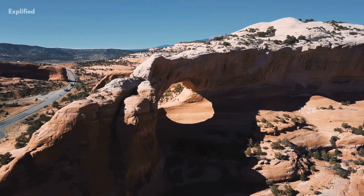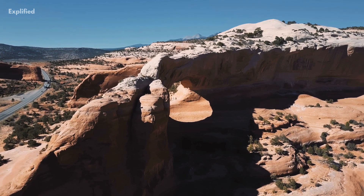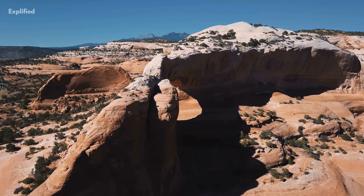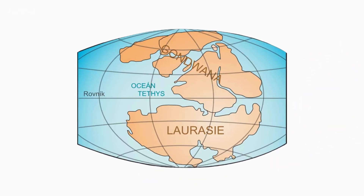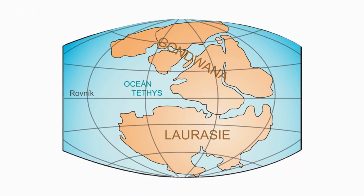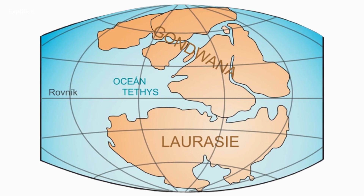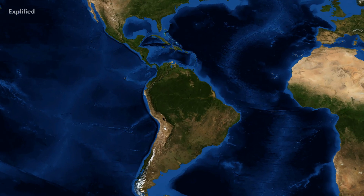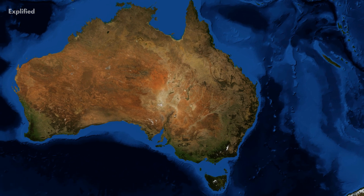The late Cretaceous Laramide orogeny continued to elevate the Rocky Mountains in the American West until the following period. The components of the old southern super-continent Gondwanaland continued to split apart, with Africa, South America, Antarctica, and Australia drifting apart from each other.